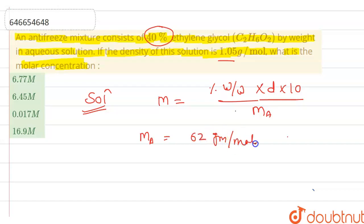Put the value in this equation to get the answer. Molarity is equal to 40 percent into density 1.05 into 10 divided by 62. So your answer will be 6.77 molar. So option A will be correct here.